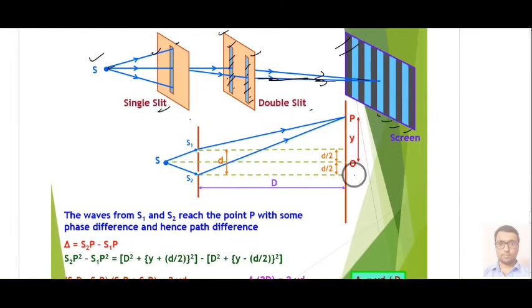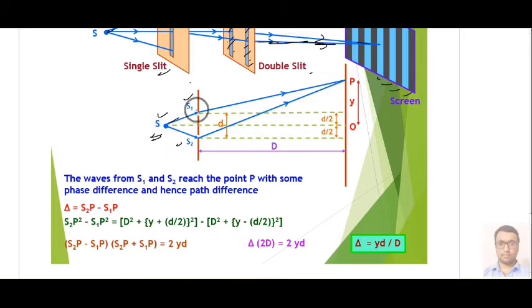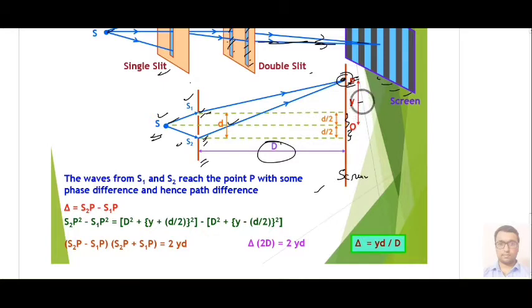This experiment was performed by a scientist called Young. We can draw a two-dimensional diagram: from the source, a wavefront travels as SS1 and SS2, passing through the two slits, and interference occurs at a point P. The screen is at a distance capital D from the two slits. The distance between the two slits is small d, so each slit is d/2 from the center. Point P is at a distance Y from center O.